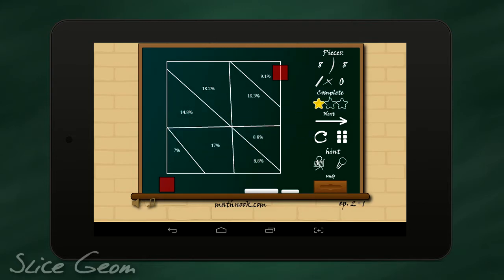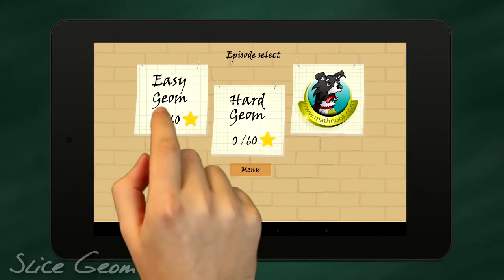How do you advance to the next level? By precisely dividing the shapes into the correct number. Get started by choosing one of two difficulty levels.